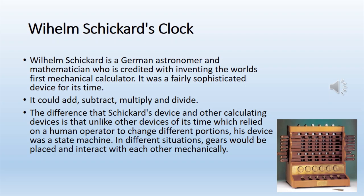Wilhelm Schickard is a German astronomer and mathematician credited with inventing the world's first mechanical calculator. It was a fairly sophisticated device for its time — it could add, subtract, multiply, and divide. Unlike other calculating devices of its time which relied on a human operator to change different portions, Schickard's device was a state machine, where gears would be placed and interact with each other mechanically in different situations.